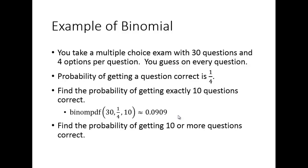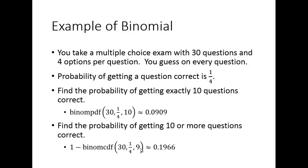What about the probability of getting 10 or more correct — say, you need at least 10 to pass? Getting 11 or 12 would also work, so we set this up as 1 minus the probability of getting 9 or fewer. For less than or equal to, you use binomial CDF. So it's 1 minus binomCDF(30, 1/4, 9), giving approximately 0.1966.